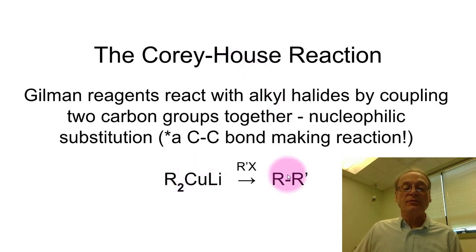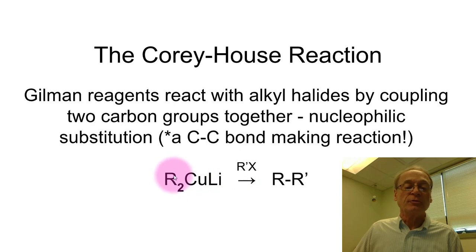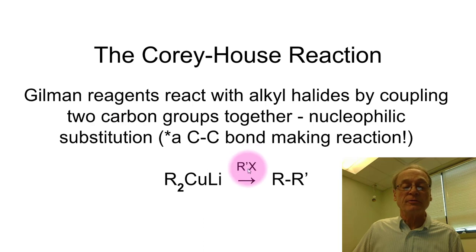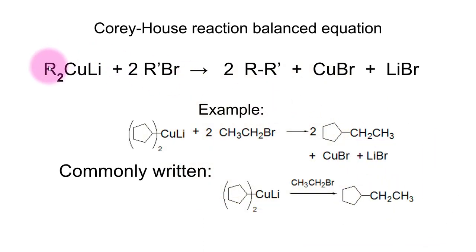Notice that this is not a balanced equation. You may wonder: if one R group goes with the R' group to make the alkane, what happens to the other R group? The answer is you actually use both of them, so you put in two equivalents of the alkyl halide.